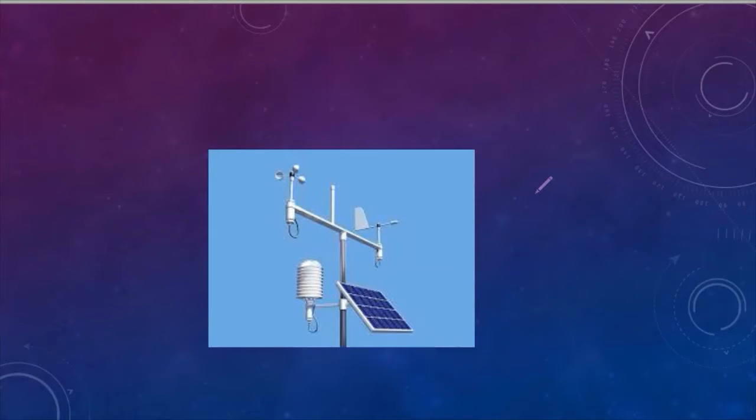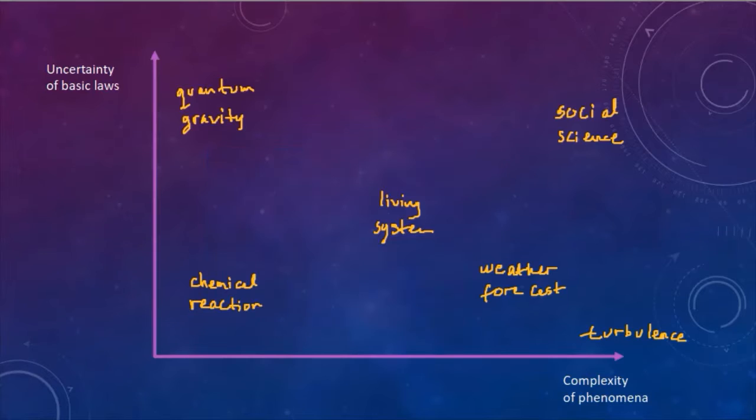So some phenomena show higher level of complexity even though we know how it works in terms of the basic laws. Some of the phenomena we are uncertain about the basic law, although it will be very simple once we find the basic laws, like quantum gravity.